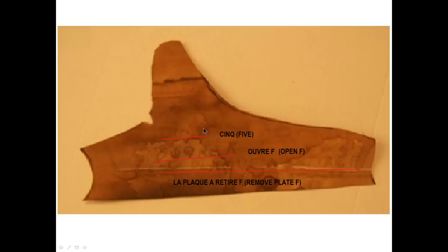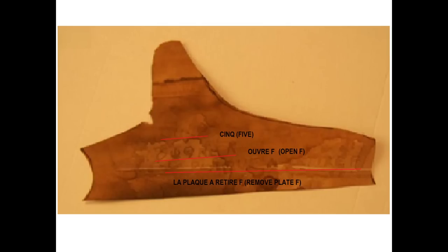You can see the Q, the C, I, and N — this is number five, and then again the word 'au revoir,' which is open F. The bottom part, if you blow it up, says 'la pleque, A, retire, F' — in other words, remove plate F. That would be the hole: there's a plate on top of the hole under the trap door being used as a plug, and they're saying to remove that plate.